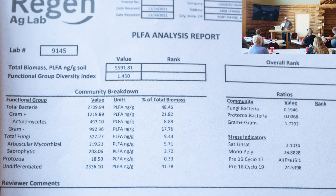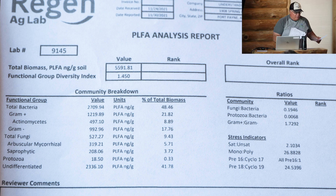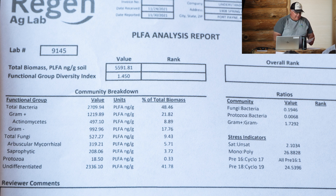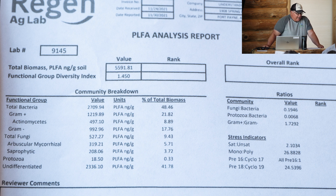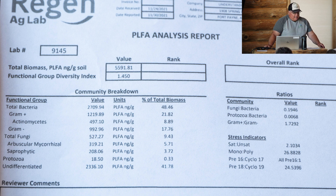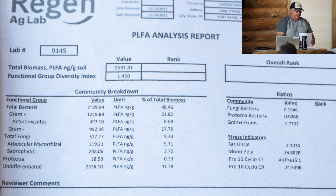Moving briefly to the PLFA analysis — we do these in combination with the Haney test but not every year, approximately once every three years. The main factor right under 'PLFA Analysis Report' is total biomass, in nanograms per gram. This one shows 5,591 — a pretty good number indicating a lot of microbial biomass in this sample.